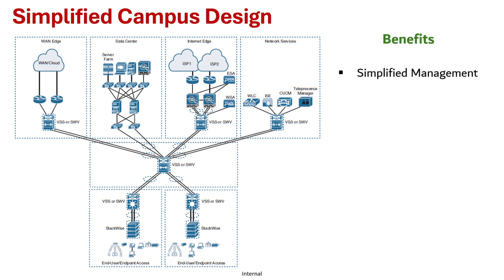When you use this type of technology, there are fewer devices to manage, which means less time spent on provisioning and maintenance. No First Hop Redundancy Protocol is required, because VSS and SWV act as a single gateway — so no HSRP or VRRP is needed.